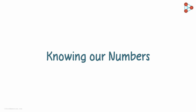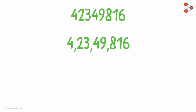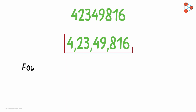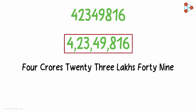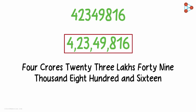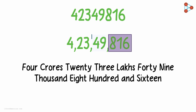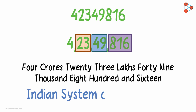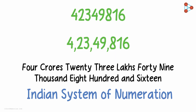We ended our previous video by writing this number with the help of commas. Using commas clearly makes it easier to express the number in words — it's 4 crores 23,49,816. But why have we used commas in such a way? We left 3 digits from the right, then 2, then 2 again. That's the Indian system of numeration. Commas are used to mark thousands, lakhs, and crores.